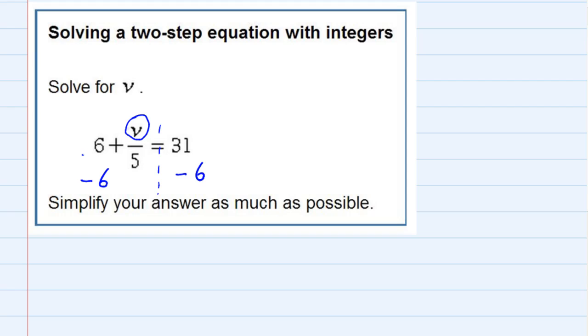On the left-hand side, the 6 minus 6 is going to cancel, leaving me just that v over 5. And then on the right-hand side, I've got the 31 minus the 6, which is 25.